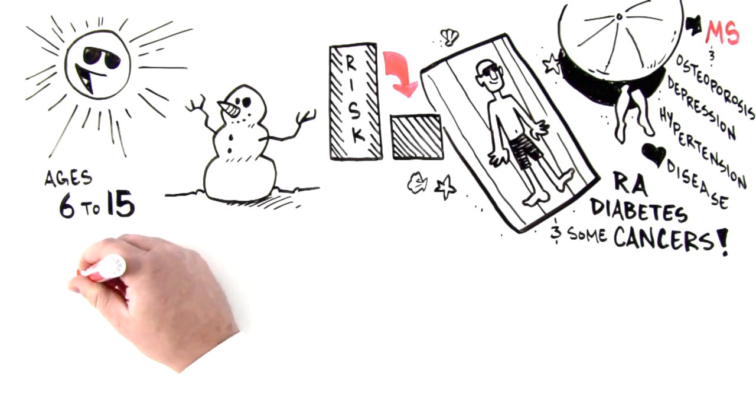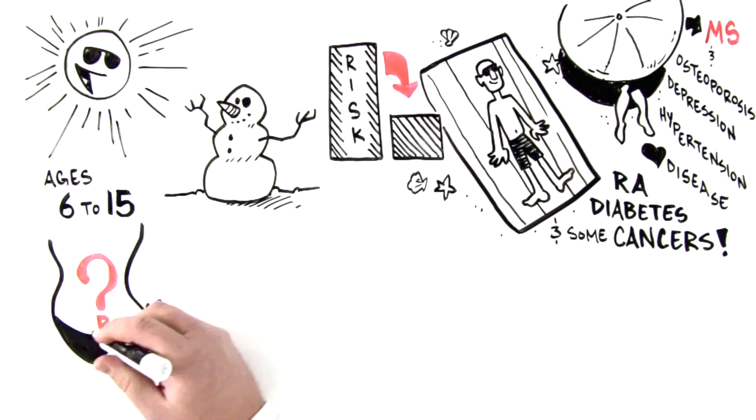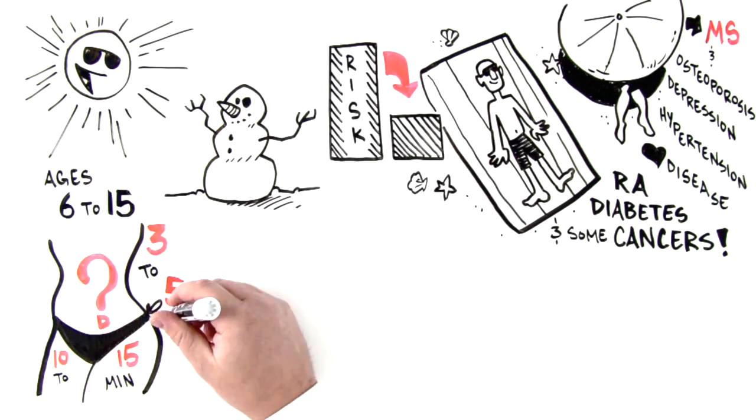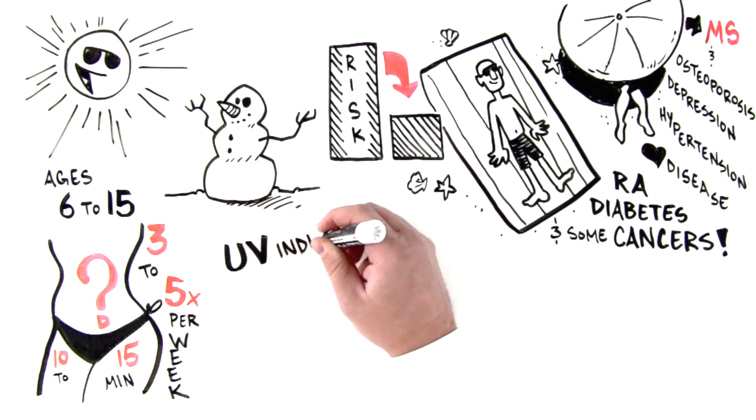So, how do we get the vitamin D you need? Getting natural sunlight as close to all over your body as is practical for about 10 to 15 minutes daily, 3 to 5 times per week on a standard UV index 7 day is the best way of getting vitamin D.